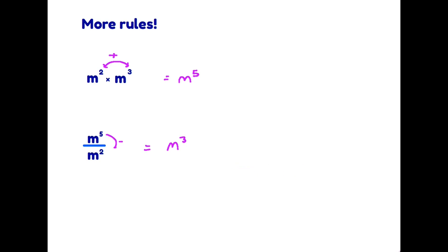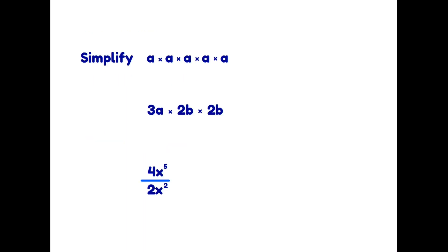That is quite a number of rules to take in all at once, so if you are still not sure about any of them please go back and have another look through them before we go further. Now let's have a look at some example questions — and you'll notice that the word 'simplify' appears here. The first one is a times a times a times a times a, and using the rules of indices we know there are five of them, so the answer is a to the power five.